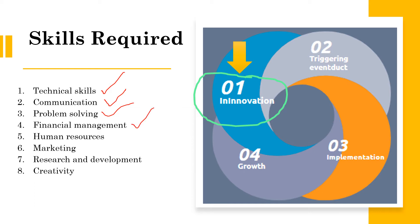Financial management: the recognition of an opportunity depends on skills that enable the entrepreneur to accurately predict financial estimates. Human resources: the entrepreneur must be able to evaluate the opportunity and how it fits with the skills of the team.